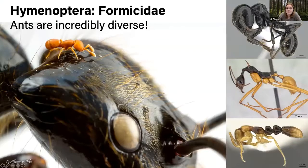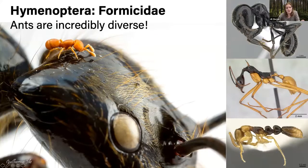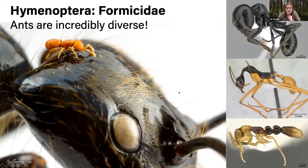Ants are so diverse — way more diverse than people realize when they just see them on the ground with the naked eye. What intrigues me most is their diversity. Here we have an ant on top of another ant and the size difference is ridiculous. They come in all sorts of sizes and crazy colors, and there are an estimated 20,000 species of ants, including hundreds in California alone.